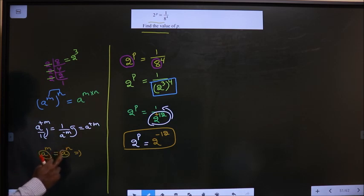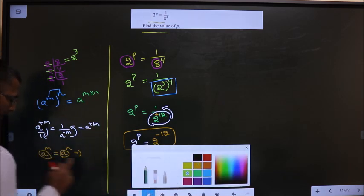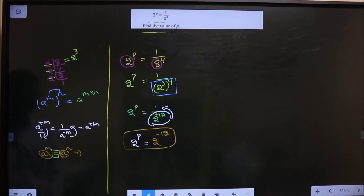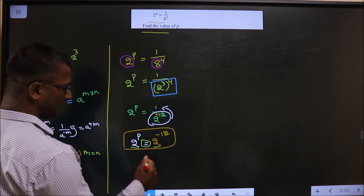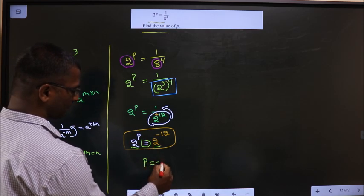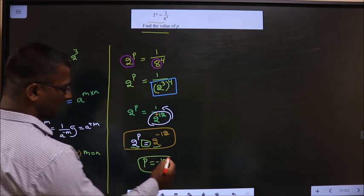The bases are same, and it is equal to between them. In that case, the powers also have to be same. So m equal to n. Bases are same, equal to, so the powers also should be same. Here also the bases are same, equal to, so equate the powers. So value of p is minus 12.